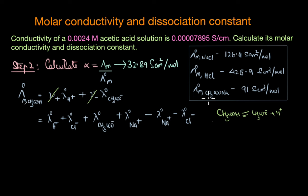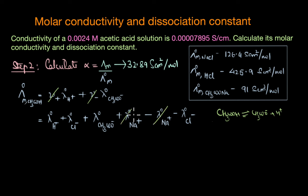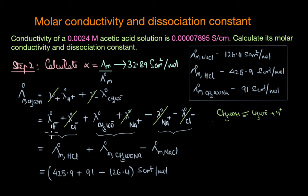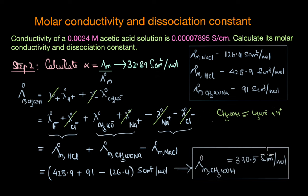The limiting molar conductivity of each electrolyte can be written as the sum of the molar ionic conductivities of its constituent cations and anions. When we add the molar conductivities of sodium acetate and HCl and subtract NaCl from it, the Na⁺ and Cl⁻ terms cancel, leaving us with the limiting molar ionic conductivities of H⁺ and CH₃COO⁻. The contribution comes from the limiting molar conductivity of HCl, sodium acetate, and sodium chloride. Substituting these values gives a final answer of 390.5 cm² per mole.